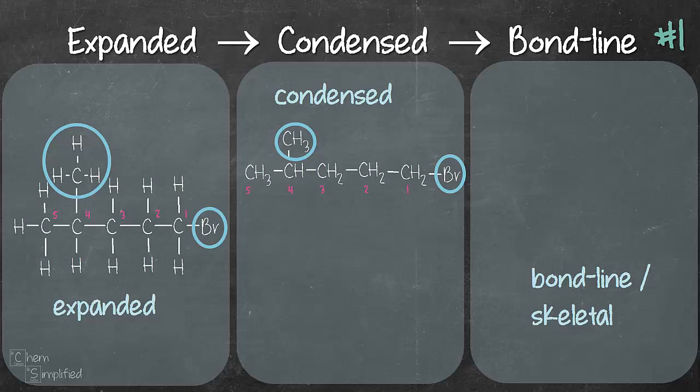And sometimes you'll notice that the bonds between the carbon and carbon are not shown and that is fine as well so it may look something like this. And this is still fine because bromine is still attached to the first carbon and CH3 is still attached to the carbon 4.